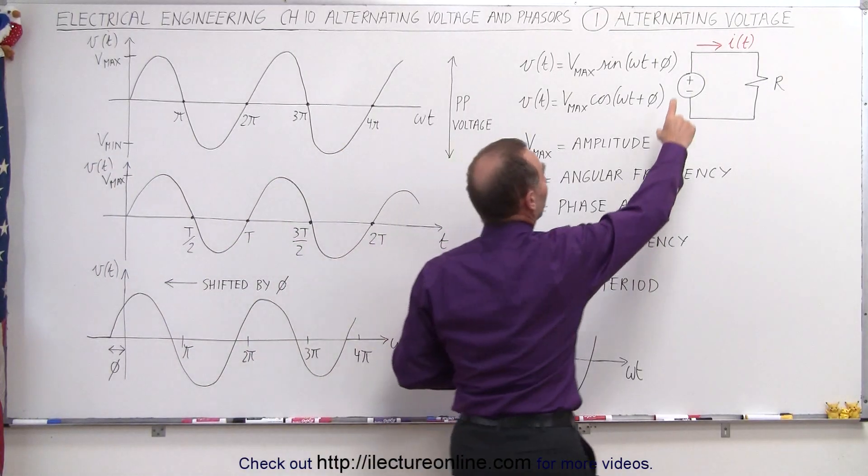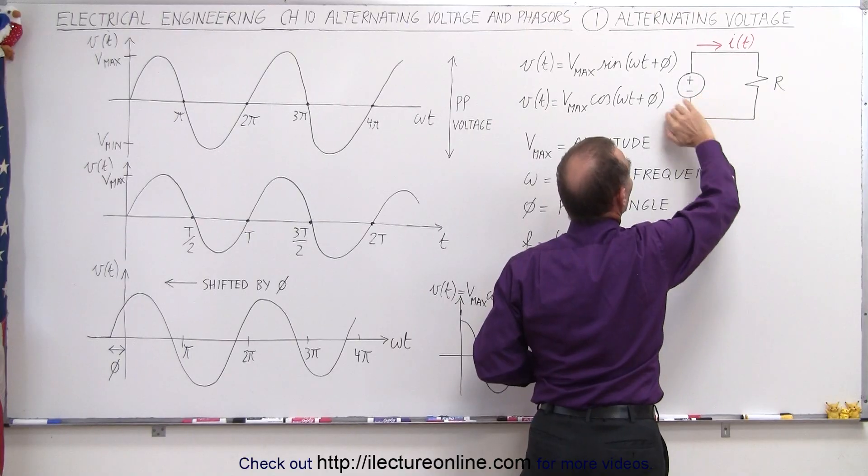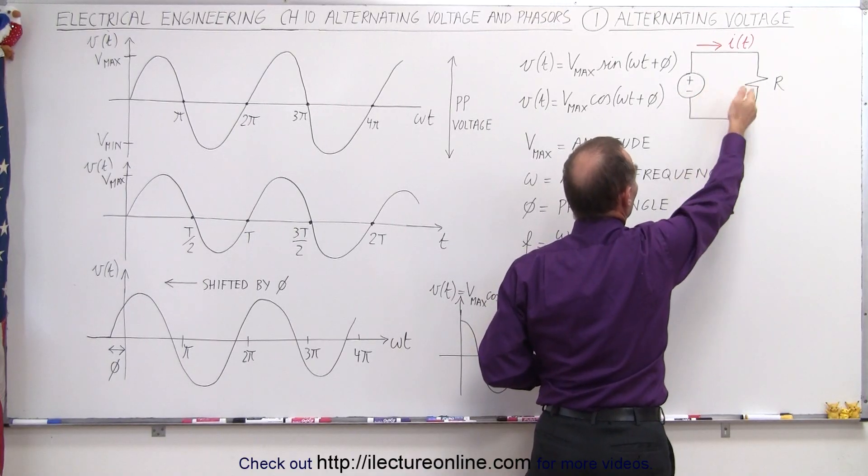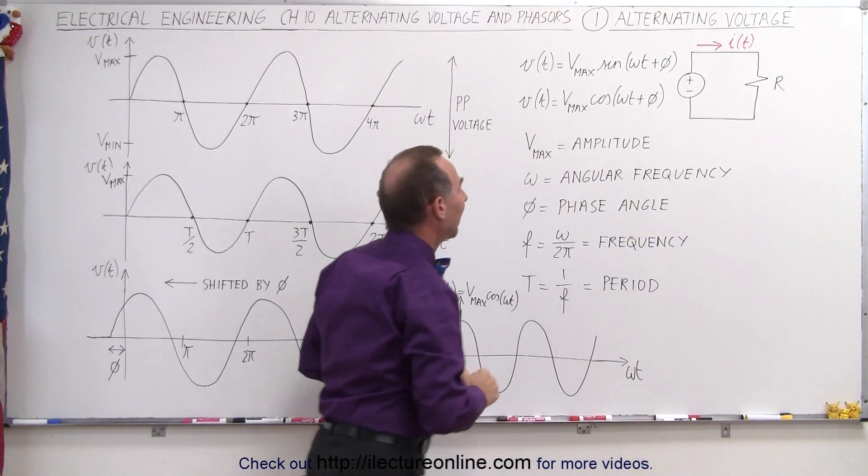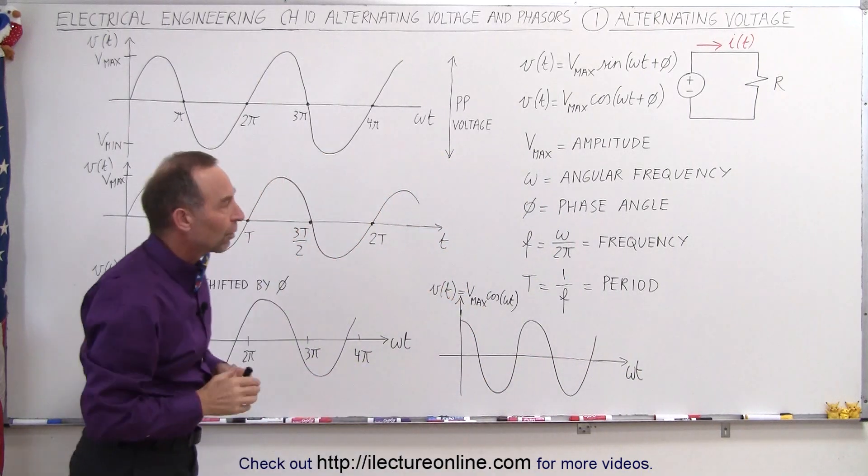Even though we mark it as plus and minus on the graph, and we'll show that a little bit later, we do realize that the current will go in both directions in every cycle, and so the voltage would be plus and minus through every cycle as well.